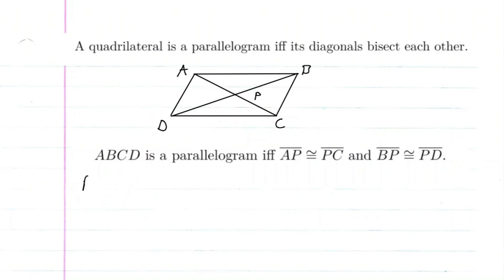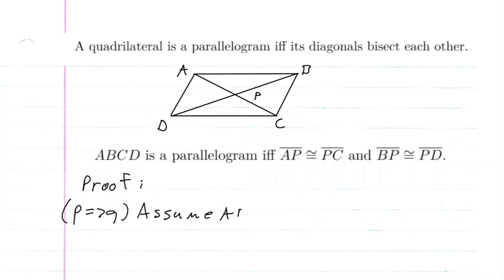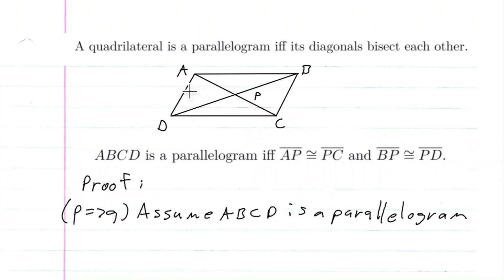Since this is an if and only if statement, we have to prove both directions. First, P implies Q: we assume ABCD is a parallelogram. In a previous video we proved that opposite sides of a parallelogram are equal, so specifically AB is congruent to CD.